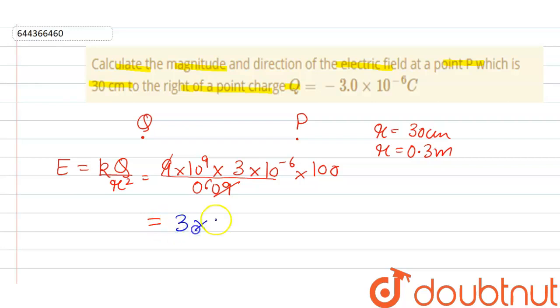3 × 10^5 newtons per coulomb, and the direction is towards